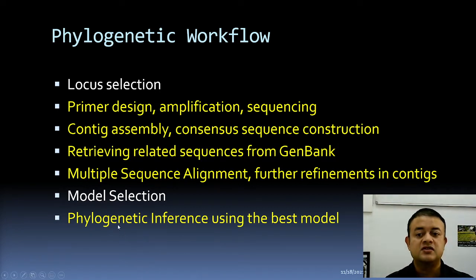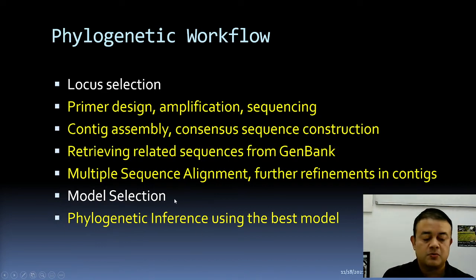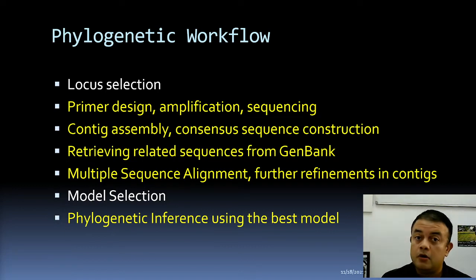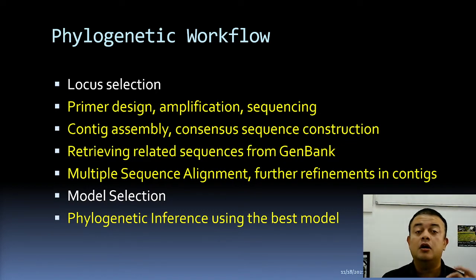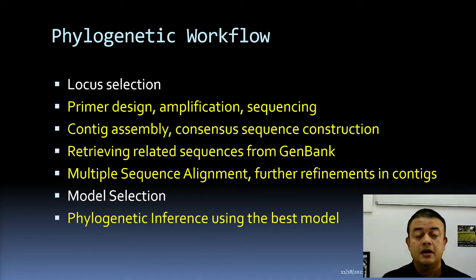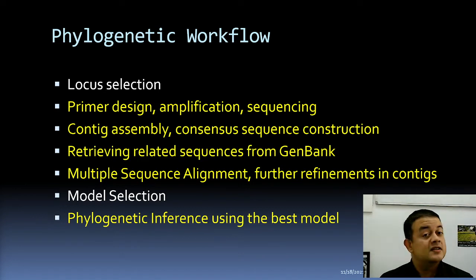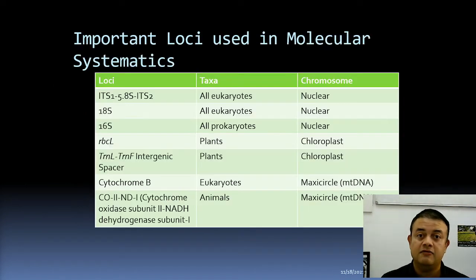Before doing the reconstruction, you need to choose the best-fitting model, which I will explain in the next module. I'll introduce the models and explain how to choose among them using the hierarchical likelihood ratio test (hLRT) or ML-based model selection tests. But first, returning to the first step: locus selection — what are the major loci used in DNA barcoding?